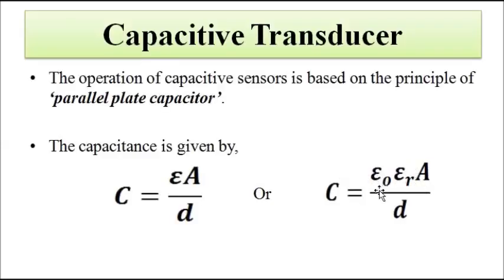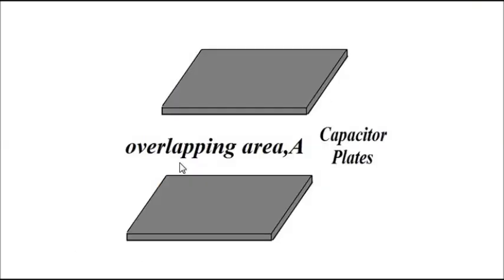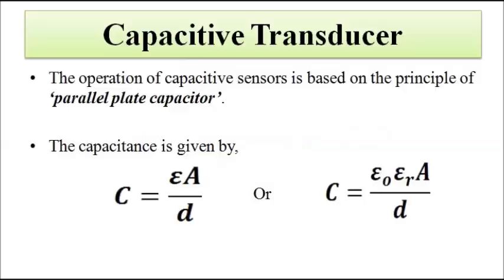ε₀ is the absolute permittivity, or the permittivity of free space. εᵣ is the relative permittivity, or the permittivity of the medium which lies between the two plates. In this case, it will be the liquid which occupies the space between the two plates. The change in capacitance can be brought about by changes in three parameters.